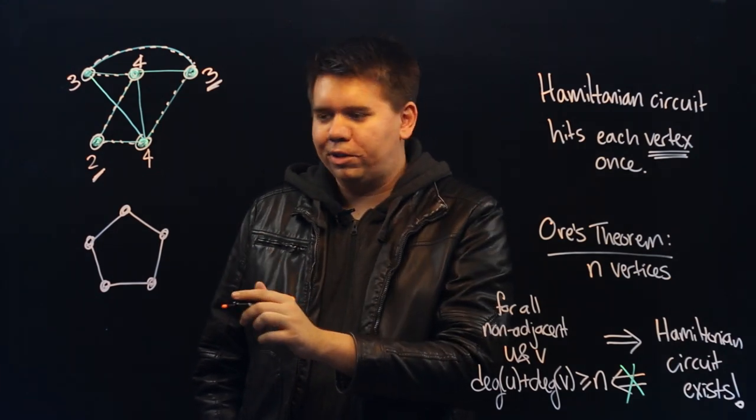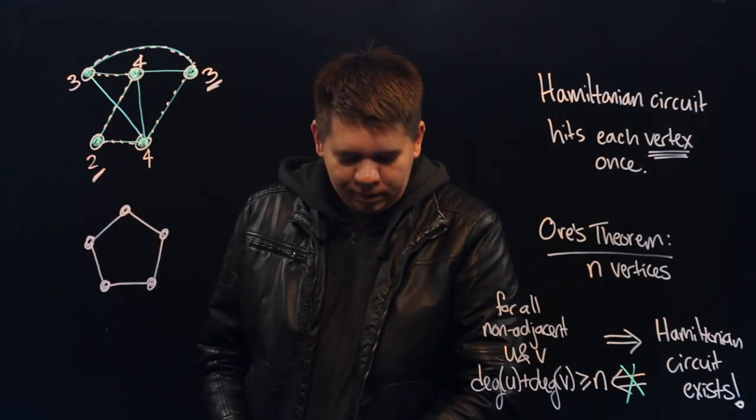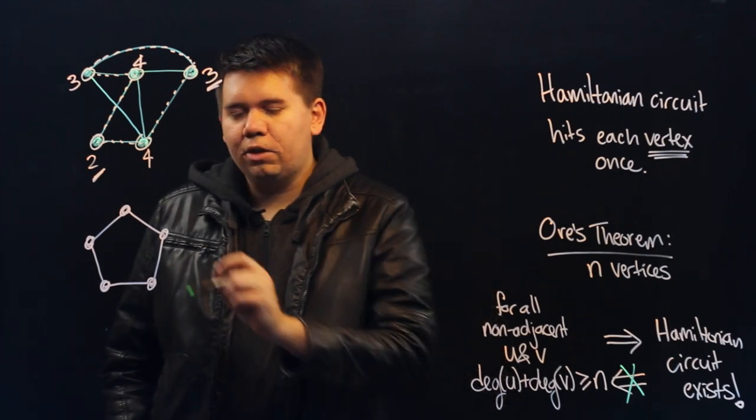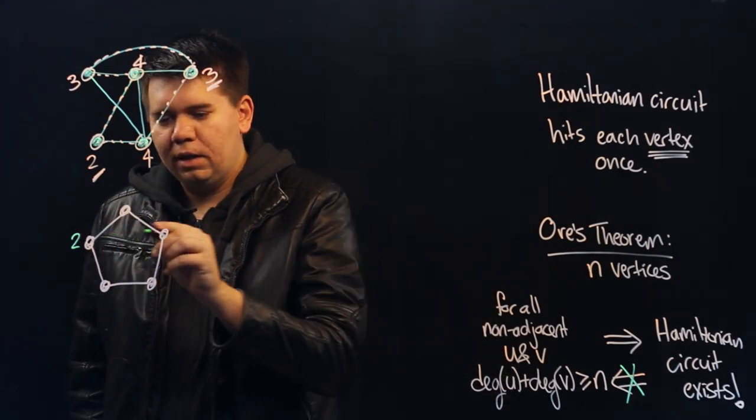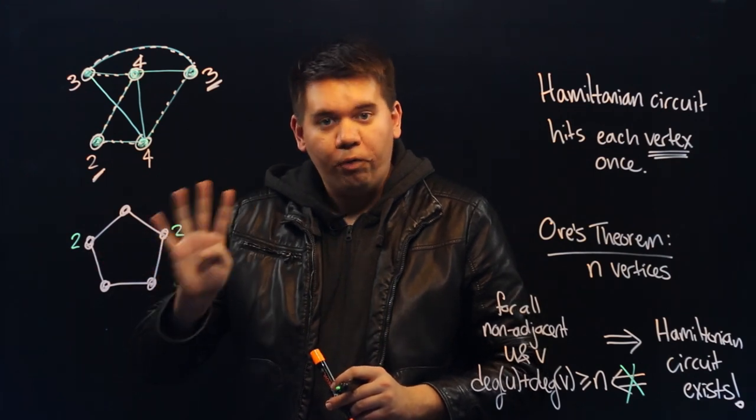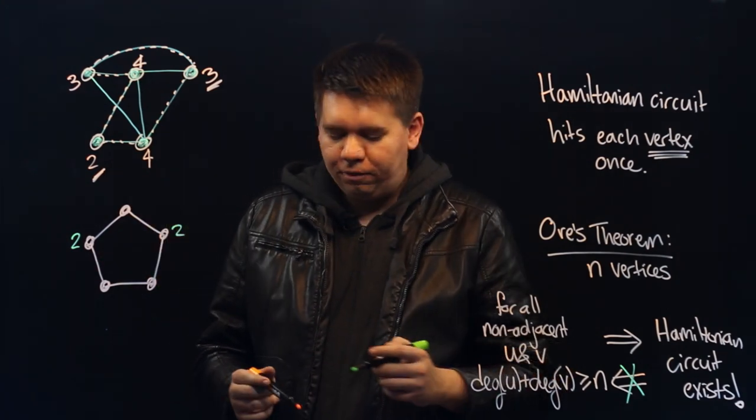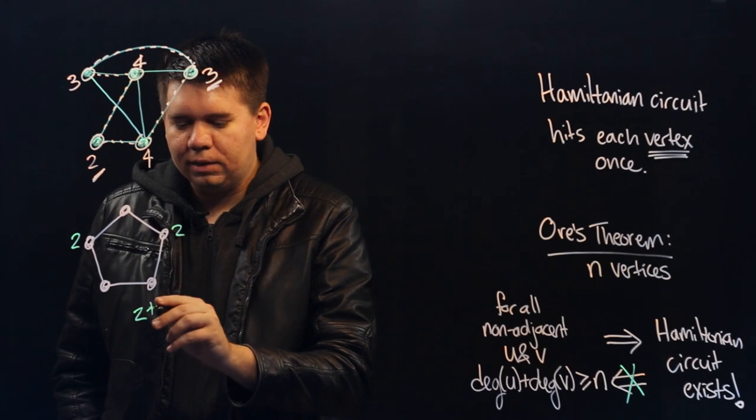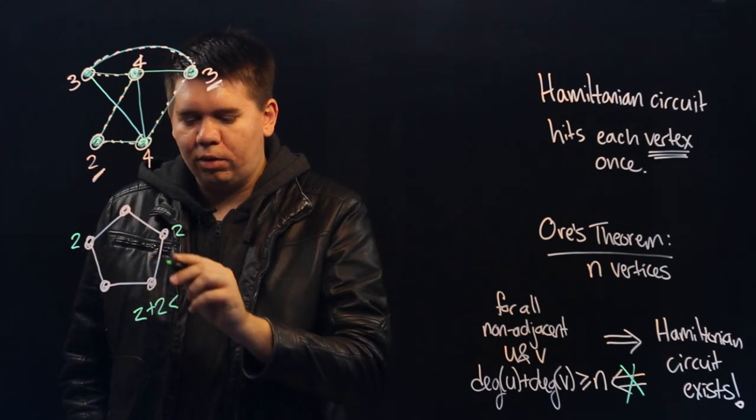Clearly there's a Hamiltonian circuit—just travel around it. But if you calculate the degree of the vertices, it's always 2. So the sum of the degree of two non-adjacent vertices is only 4, which is less than 5. 2 plus 2 is less than the total number of vertices.